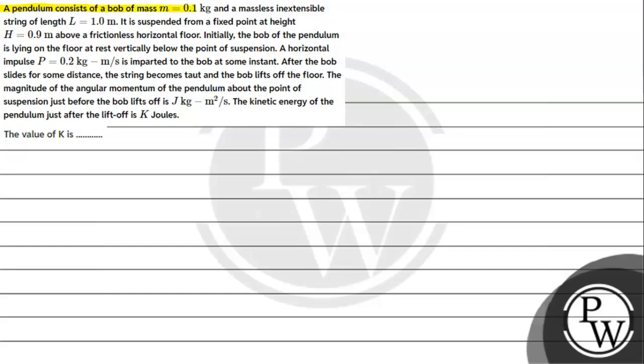The question says a pendulum consists of a bob of mass 0.1 kg and a massless inextensible string of length 1 meter. It is suspended from a fixed point at height h equal to 0.9 meter above a frictionless horizontal floor. Initially, the bob of the pendulum is lying on the floor at rest vertically below the point of suspension.